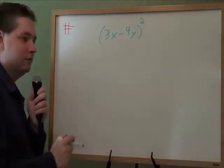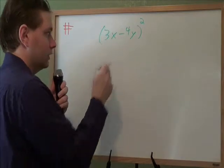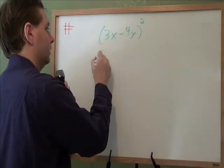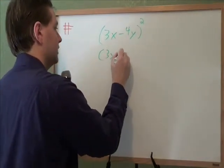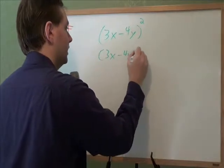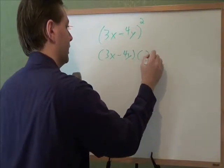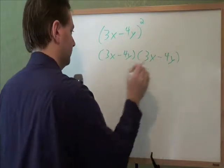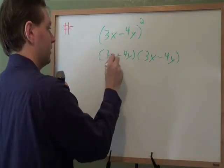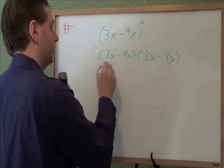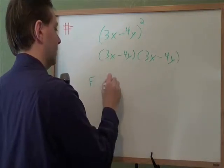To start this problem, you need to remember, what does squared mean? Squared means times itself. So we need 3x minus 4y times itself, times another 3x minus 4y. And then when we have something like this times something like that, we need to use the FOIL process on it.